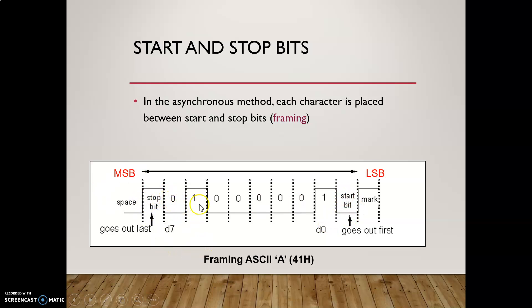Consider an example: we have to transmit ASCII code 'A' through the asynchronous method. The 8-bit ASCII representation of 'A' is 01000001. This 8-bit ASCII code is placed in between the start bit and the stop bit. So the total data including start and stop bit becomes 10-bit data, and this 10-bit data is transmitted asynchronously.